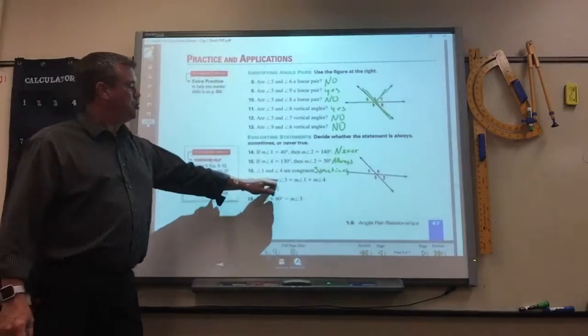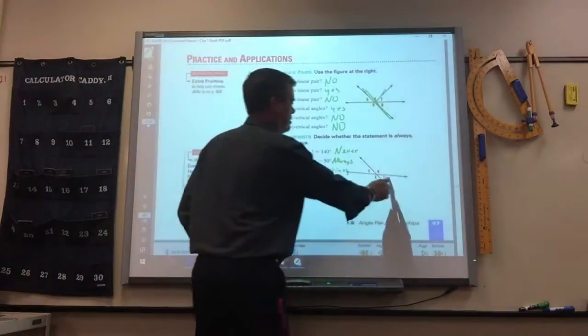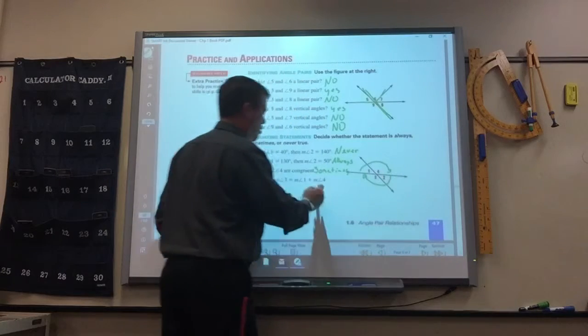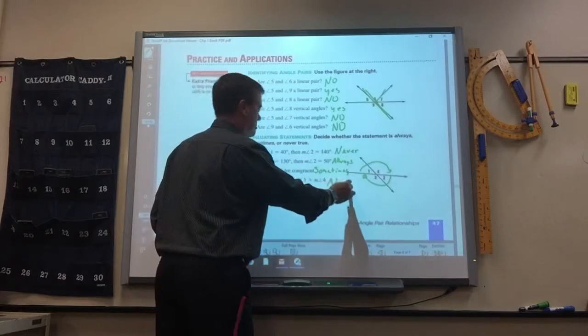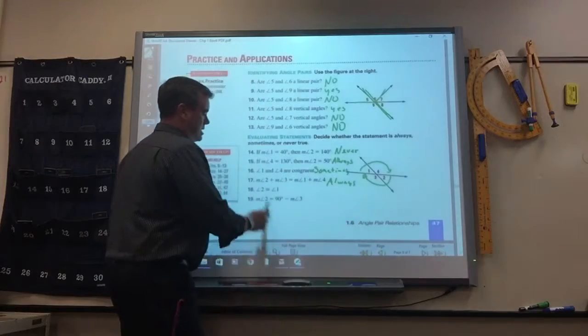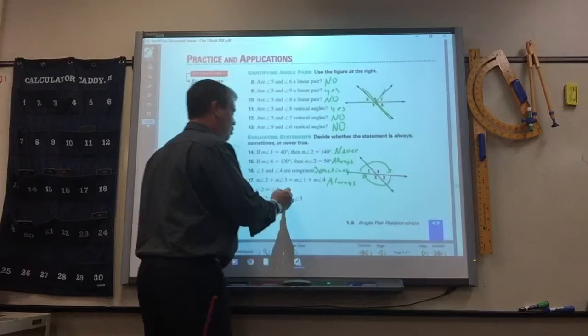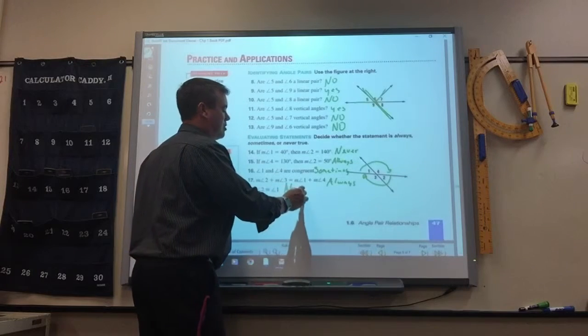Okay. The measure of 2 plus 3 equals the measure of 1 plus 4. Always. Yeah. Always. Is angle 2 congruent to angle 1? Always. Because that's vertical angles.